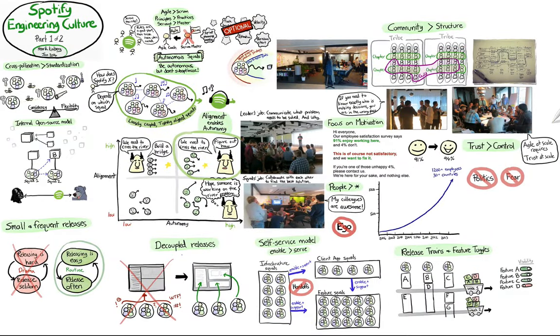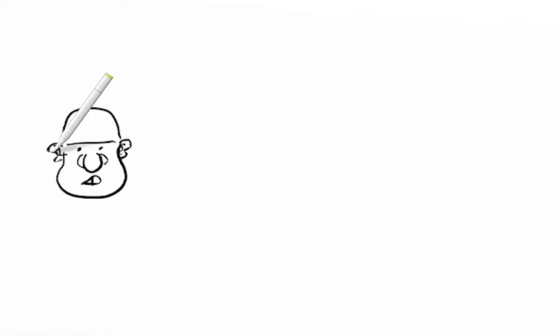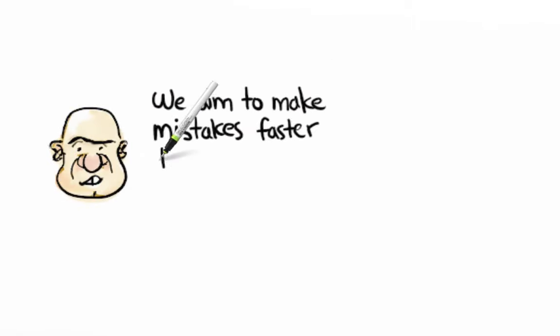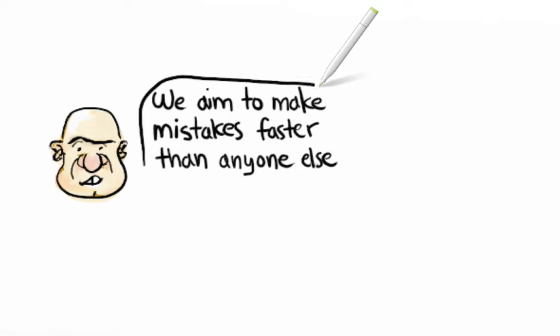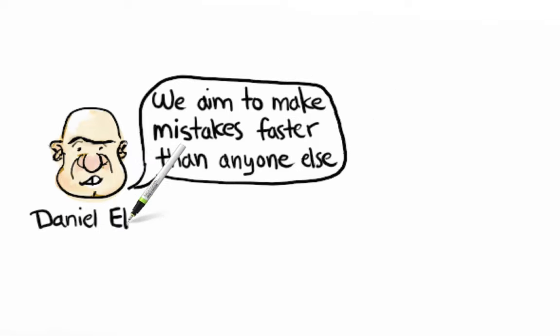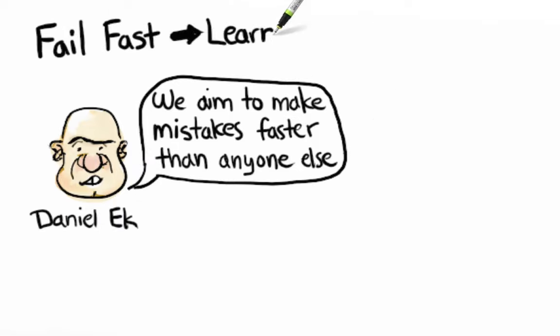And now I'd like to talk about failure. Our founder Daniel put it nicely. We aim to make mistakes faster than anyone else. The idea is to build something really cool, we will inevitably make some mistakes along the way. But each failure is also learning. So if we fail fast, we learn fast, and therefore improve fast. It's a strategy for long-term success.